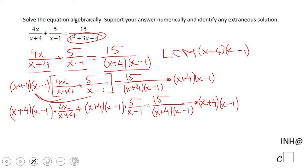Okay, what do I mean by that? You notice these two guys cancel out, so we have 4x times x minus 1. These two guys cancel out, so we have 5 times x plus 4, because the multiplication is commutative. And on the other side, that's the reason we did what we did, and we have only 15.